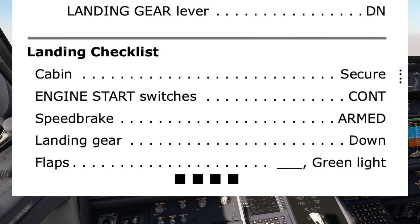Landing checklist: cabin secure — it is secure. Engine start switches continuous — they're set to continuous. Speed brake armed — it's armed. Landing gear down — it's down. Flaps 30 green light — 30 green light. Landing checklist and loss of system A checklist complete.